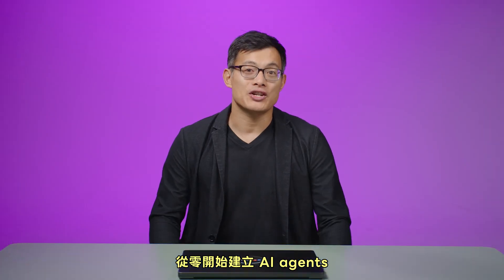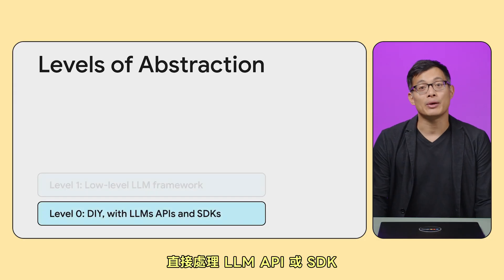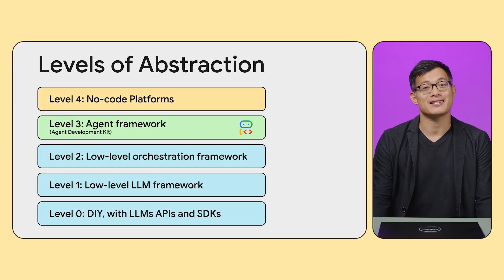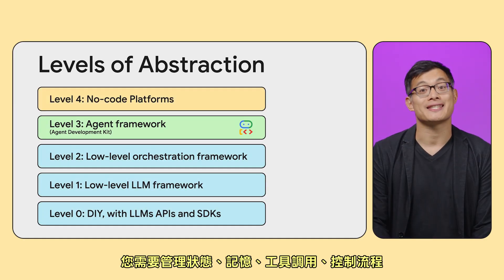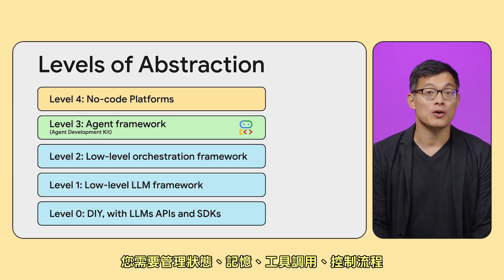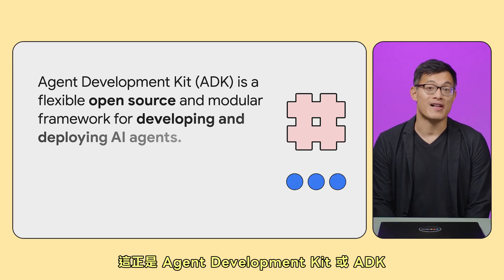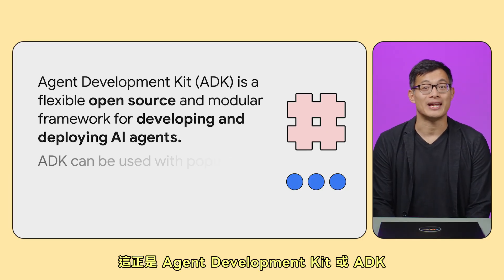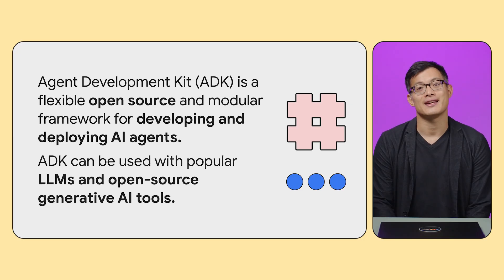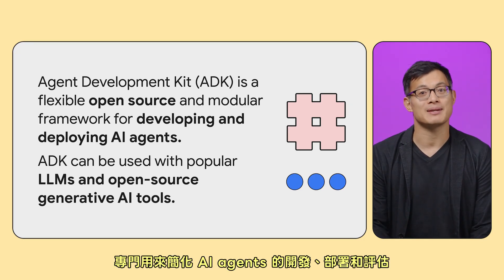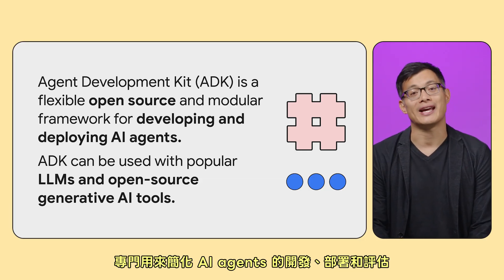Building AI agents from scratch, dealing directly with LLM APIs or SDKs can quickly become complex. You're managing state, memory, tool calls, control flow, and more — often reinventing the wheel for common patterns. That's precisely what the Agent Development Kit, or ADK, is designed to address. It's a flexible and modular open-source framework, specifically built to simplify the development, deployment, and evaluation of AI agents.